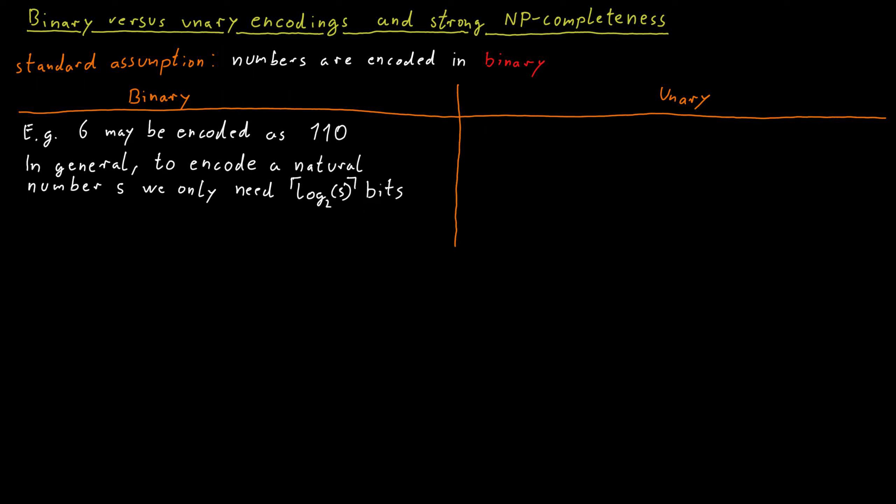The idea here is that we just repeat the symbol 1 as many times as the number to be encoded is big. So if I have the number 6 again, for example, we would just write a string consisting of 6 consecutive 1s.